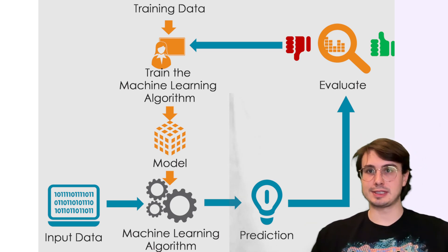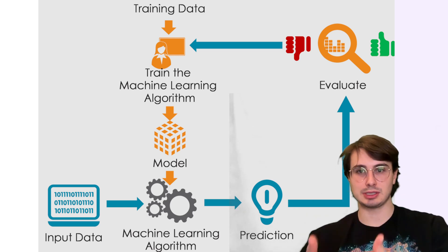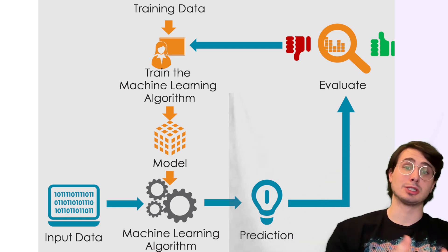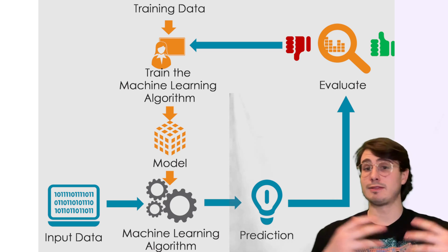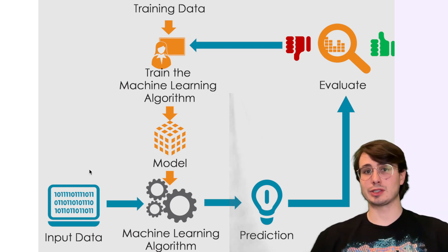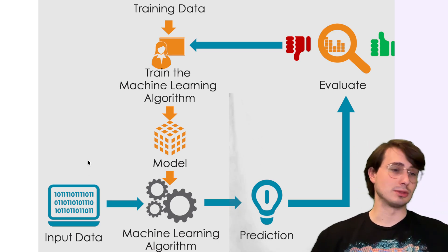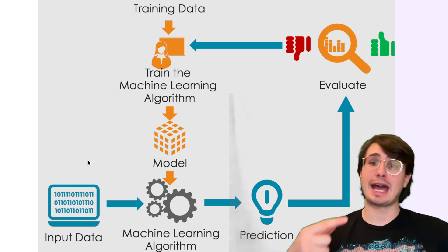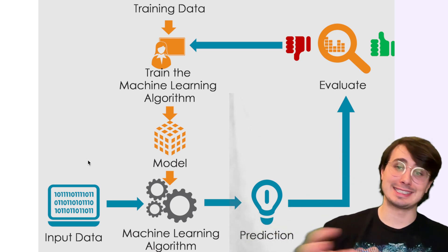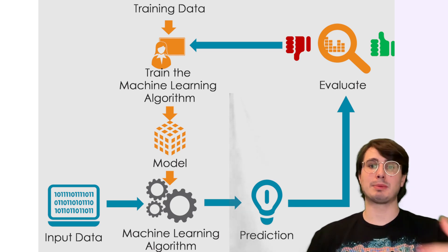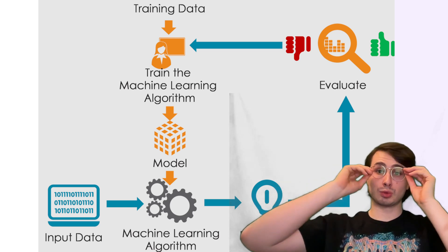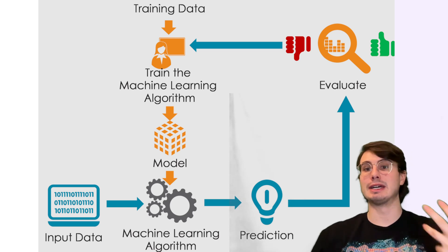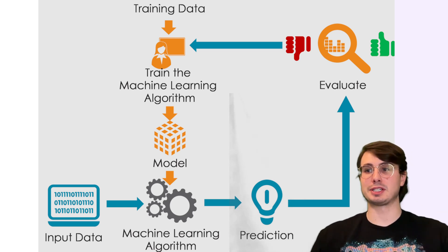If the model is successful, you publish it so others can feed in customer attributes and get an output like 'this customer is probably going to buy this.' If it's not successful, you try a different machine learning algorithm or trim some of the data. You try to identify which features matter — maybe a customer's weight doesn't really dictate what they'll buy, but their hair color does. It's a multi-step process of constantly figuring out the most relevant values and data to generate the right predictions.